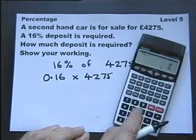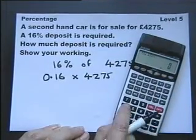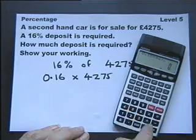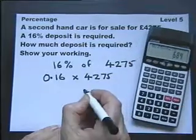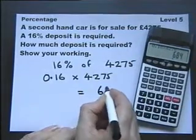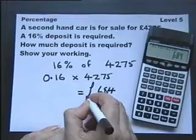So here we go. 0.16 for 16%, multiplied by 4,275, equals, and that will give us the answer. But don't forget to say it's pounds.